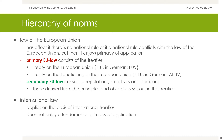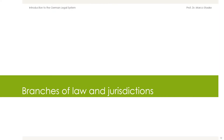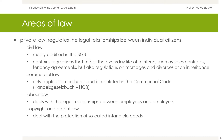Let's take a look at the branches of law and jurisdictions. German law is divided into two major areas: private law and public law. Private law regulates the legal relationships between individual citizens. The core of private law is civil law, which is codified in the German Civil Code, Bürgerliches Gesetzbuch. It contains regulations that affect the everyday life of a citizen, such as sales contracts, tenancy agreements, but also regulations on marriages and divorces or on inheritance.